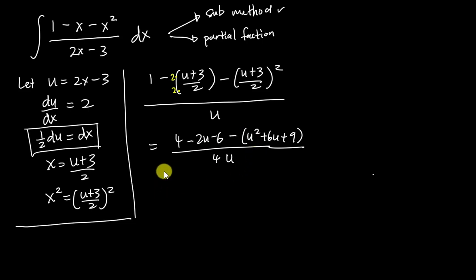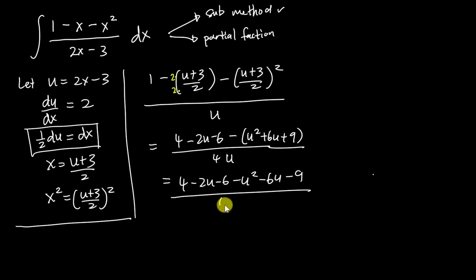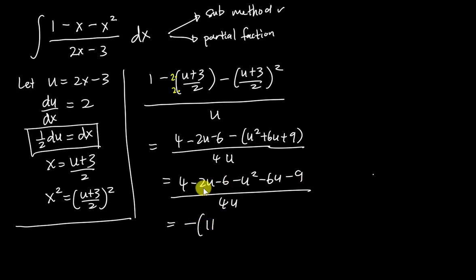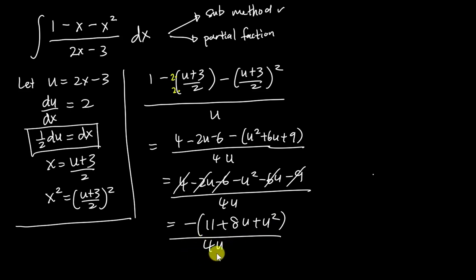I'll factor out a negative. Combining constants: 6 + 9 = 15, minus 4 gives 11. Combining u terms: 2u + 6u = 8u. So the numerator becomes -(11 + 8u + u²), giving us -(11 + 8u + u²) over 4u after factoring out the negative.